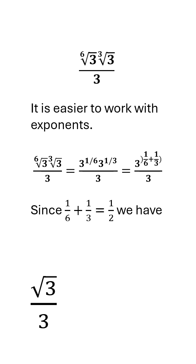But since 1/6 plus 1/3 is 1/2, our numerator becomes 3 to the 1/2, or the square root of 3 over 3. At this point, it's simplified.